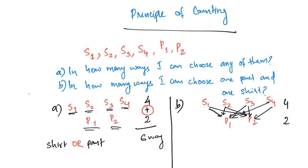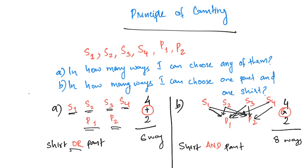With one shirt I have 2 pant options, so with 4 shirts I can choose in 4 into 2 equals 8 ways. So the key rule is: while counting, if we have an OR in choosing things, we use addition. If we have an AND in choosing things, we use multiplication.